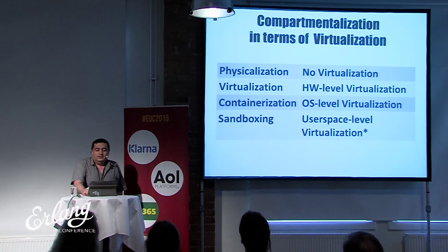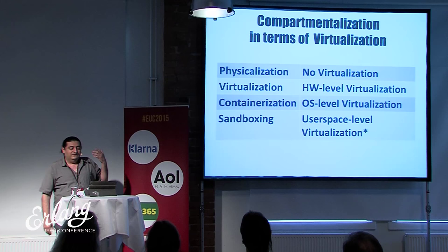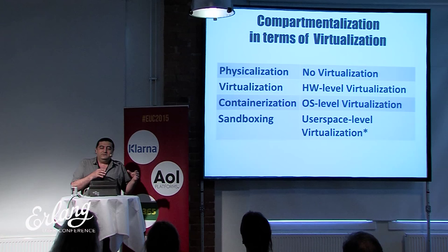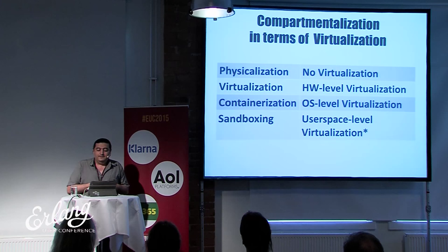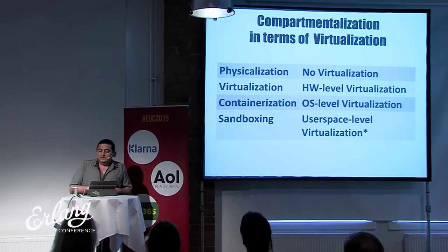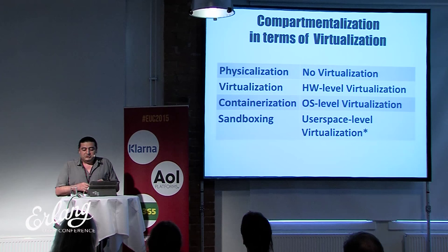To summarize the types of compartmentalization: physicalization is the absence of virtualization — we run every workload on a separate machine. Virtualization takes a large machine and separates it into multiple virtual machines — hardware-level virtualization. Containerization is operating system-level virtualization where multiple containers share the same Linux kernel. Sandboxing shares user space between different sandboxed applications.